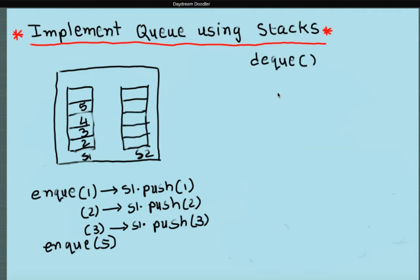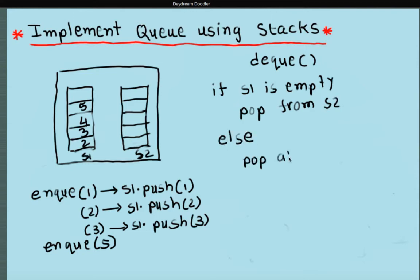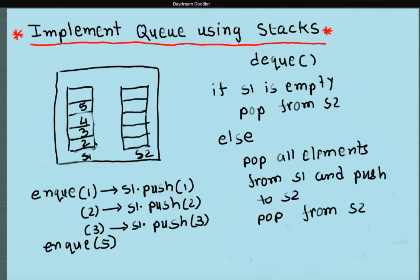Now let's see how the dequeue logic looks like. The dequeue logic is exactly opposite to NQ. In dequeue, first check if S1 is empty — if so, pop from S2 and that gives you the top element. If S1 is not empty, pop all elements from S1 and push to S2, then pop from S2. Looking at this picture, S1 has 2, 3, 4, 5. We go to the else condition: pop 5, push to S2; pop 4, push to S2; pop 3, push to S2; pop 2, push to S2. Once all elements are moved from S1 to S2, pop from S2 gives you 2.